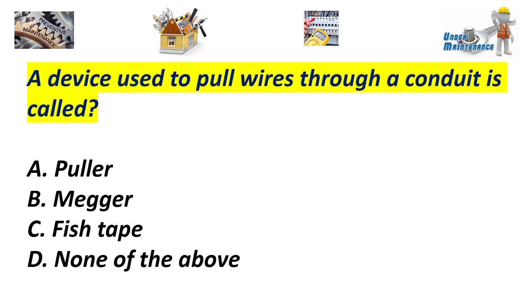A device used to pull wires through a conduit is called: A. Polar. B. Meager. C. Fish tape. D. None of the above. Answer: C. Fish tape.